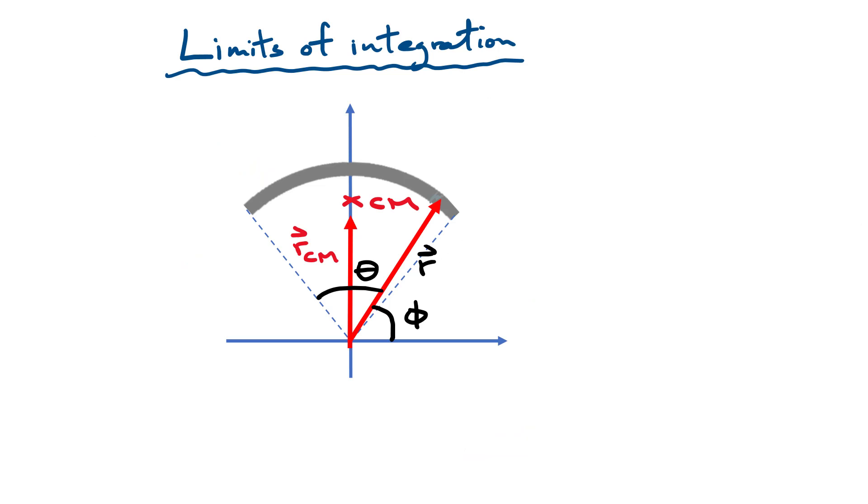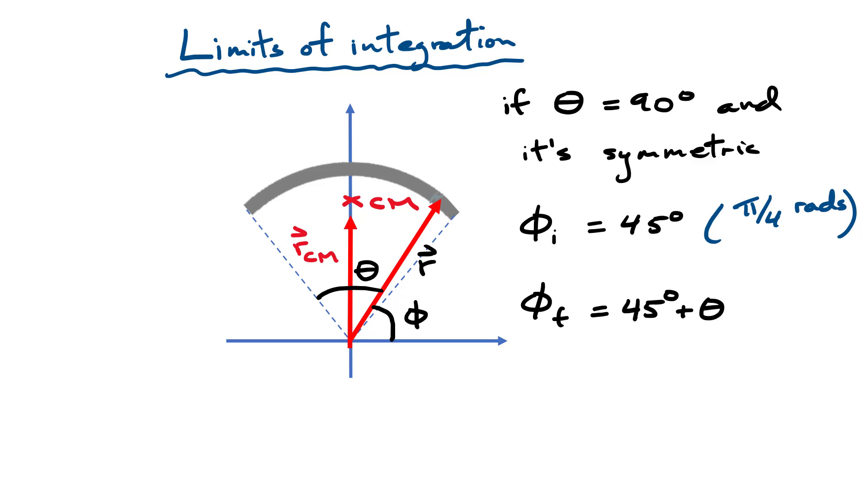We now need to set up the limits of integration. We've defined that angle theta to be 90 degrees, and the object is symmetric about that vertical axis. So right away, you should be able to write that initial angle phi where I start the integral is going to be 45 degrees. You can write that as pi over four if you want to work in radians. Now the final angle, you could see from this figure, you could define the final angle as being the initial 45 plus my angle theta. Just substitute my 90 degrees in there, and we get our final angle, which is 135 degrees. You can also write that in radians as 3 pi over 4. Pretty straightforward. Let's go back to the integral now.